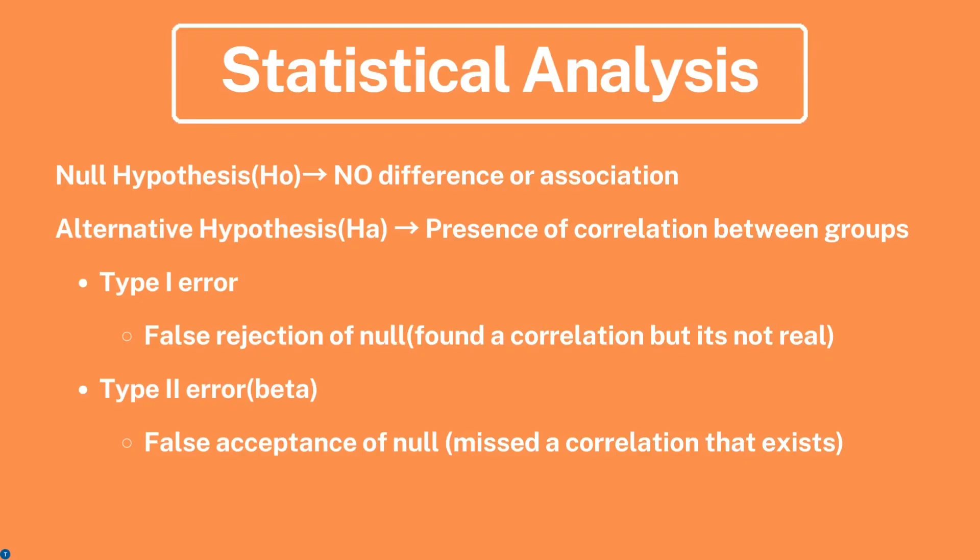When reviewing statistical analysis, let's review the basics first. A null hypothesis, abbreviated H0, states that there is no difference or association between two groups. The alternative hypothesis, Ha, means there is a presence of correlation between the two groups.